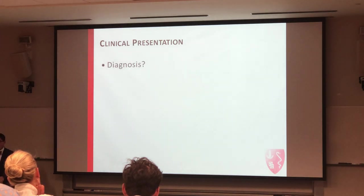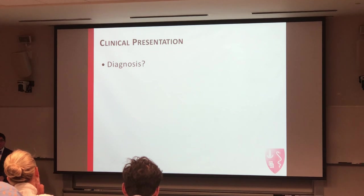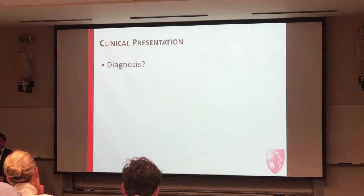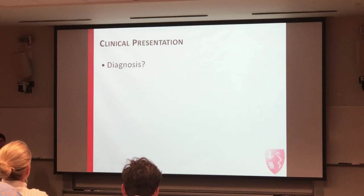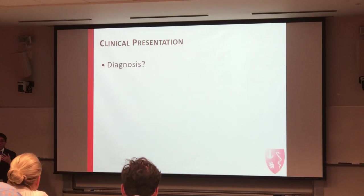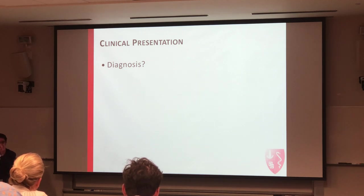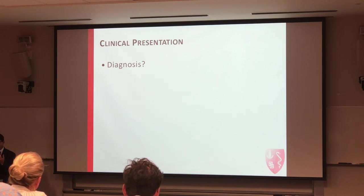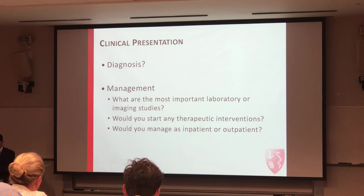So the clinical presentation points toward a diagnosis. The diagnosis is endophthalmitis — endogenous endophthalmitis, since she hasn't had any surgical procedures. Bilateral involvement noted. So for the most important labs and therapeutic intervention: blood culture, and echocardiogram to look at the heart — is there endocarditis leading to this? You have to look for the source.